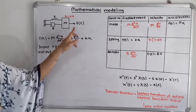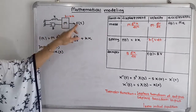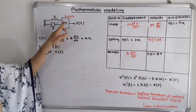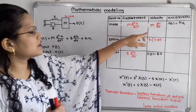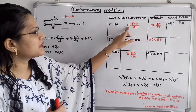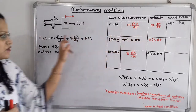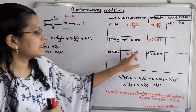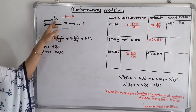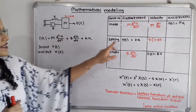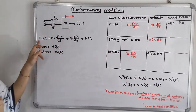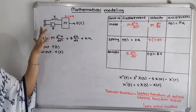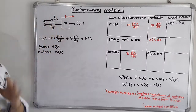The action force is nothing but f(t). So f(t) equals: force due to mass is m·d²x/dt², force due to damper is b·dx/dt, and force due to spring is kx. So this is the mathematical model for this given mechanical system.